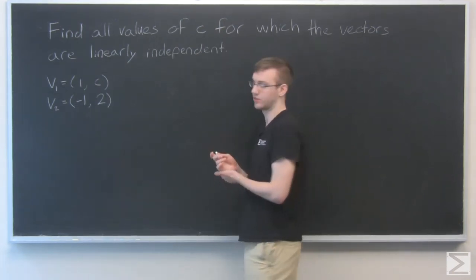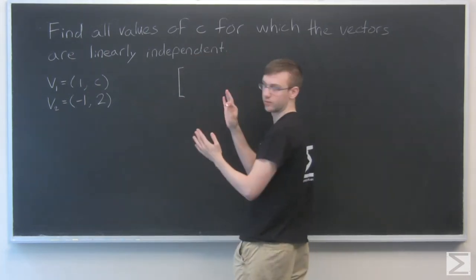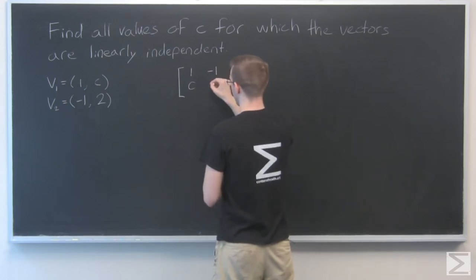So I'm going to put them into a matrix, and V1 and V2 will be the columns of that matrix: 1, C, and minus 1, 2.